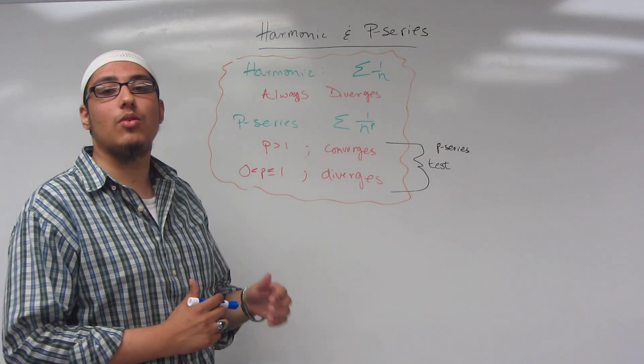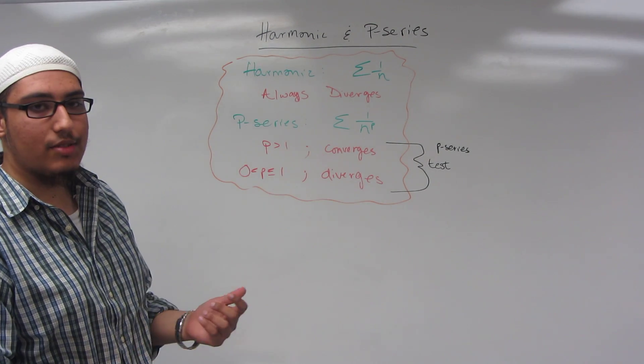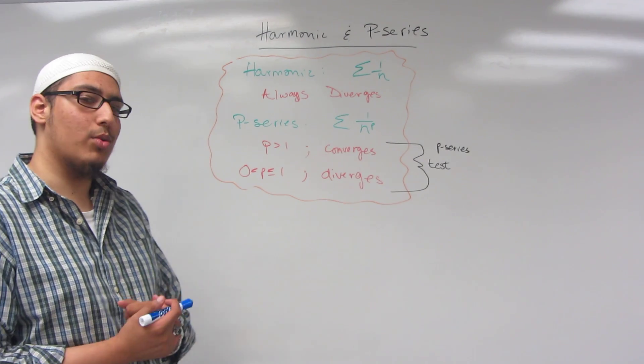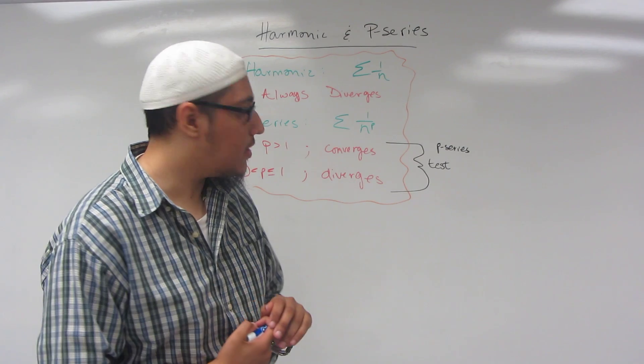That's sigma 1 over n. Now the good thing about harmonic series is that there's really no test involved with it. It is always divergent. So every time you see sigma 1 over n, there's always a divergent series.